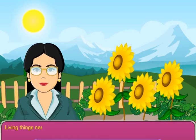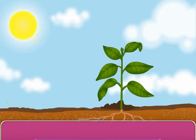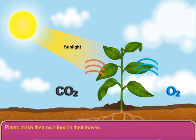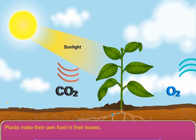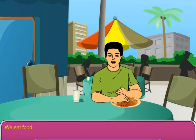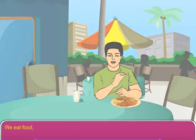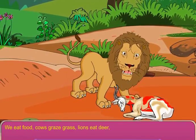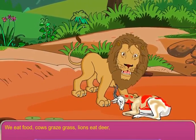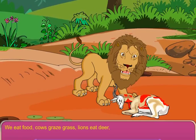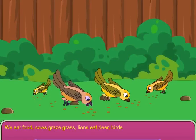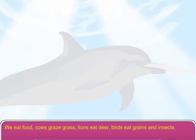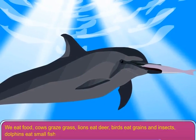Living things need food. Plants make their own food in their leaves. We eat food. Cows graze grass. Lions eat deer. Birds eat grains and insects. Dolphins eat small fishes.